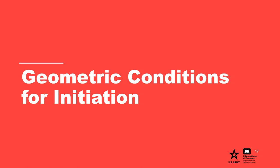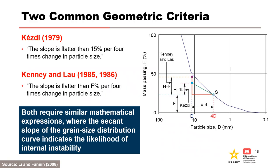A number of researchers have developed empirical methods to assess the potential for internal instability of a soil. Most methods are based on quantification of the shape of the particle size distribution curve and have been developed and/or verified against laboratory test data. Given the empirical nature of these methods, most methods are not applicable to all soil types, but are considered only suitable for the type of soils that were examined in the original development of the methodology. Kezdy (1979) and Kenny and Lau (1985–1986) are two of the earliest criteria. Both methods require similar mathematical expressions where the secant slope of the grain size distribution curve indicates the likelihood of internal instability, and the common feature is the examination of the slope of the gradation curve over a discrete interval of its length.